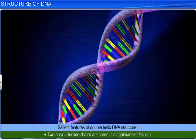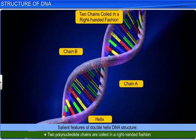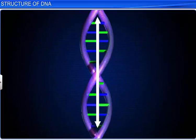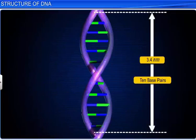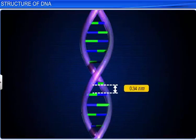Another salient feature of the helix structure is that the two chains are coiled in a right-handed fashion. Therefore, the pitch of the helix is 3.4 nanometers, and each turn consists of about 10 base pairs. As a result, the distance between a base pair in the helix is around 0.34 nanometers.